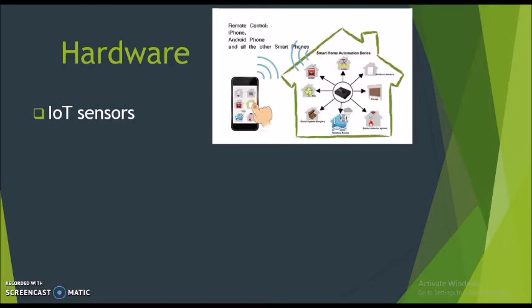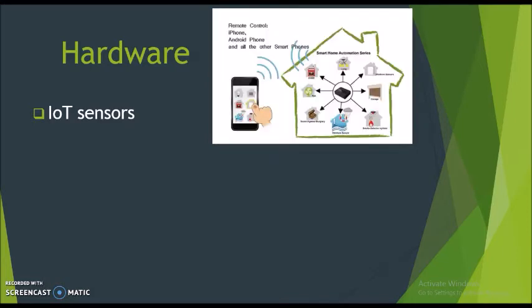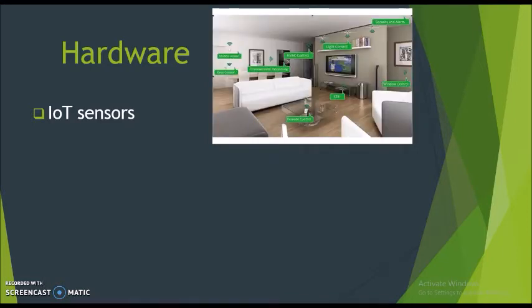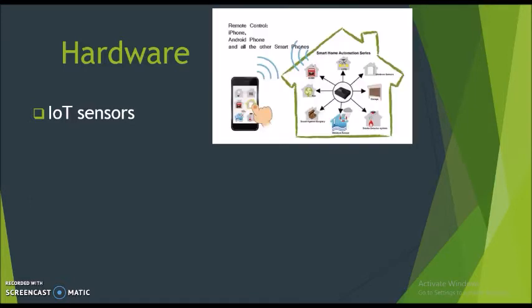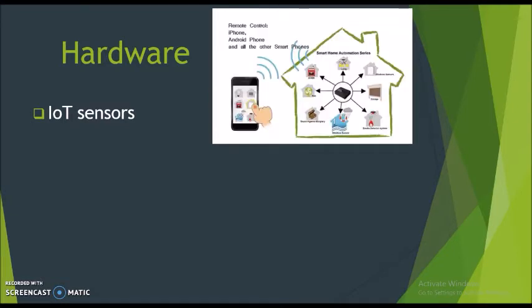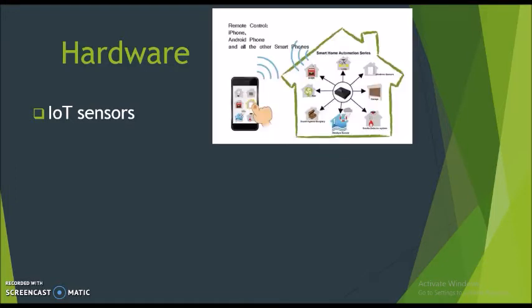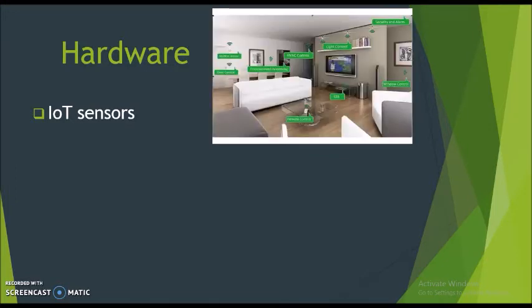IoT sensors: the most important hardware in IoT might be its sensors. These devices consist of energy modules, power management modules, RF modules, and sensing modules. RF modules manage communications through signal processing, Wi-Fi, ZigBee, Bluetooth, radio transceiver, duplexer, and BAW. The sensing module manages sensing through active and passive measurement devices.